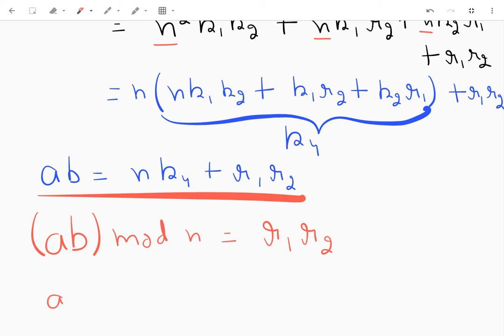And my original assumption was that ab mod n is equal to r, so from here it is obvious that r is equal to r1 into r2. And hence I can conclude that ab mod n is equal to a mod n times b mod n.